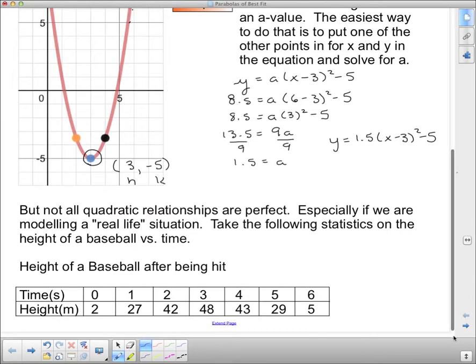But not all quadratic relationships are perfect, especially if we're modeling a real-life situation. Take the following statistics on the height of a baseball versus time. So we have the time in seconds and the height in meters. And we need to find an equation that matches these statistics.